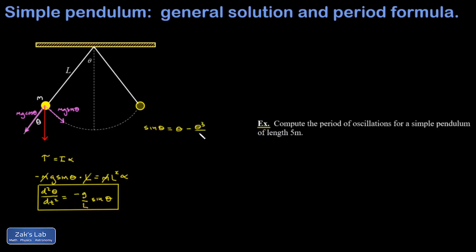So theta minus theta cubed over 3 factorial, plus theta to the 5th over 5 factorial, minus, and so on. This is sometimes called the Maclaurin series.